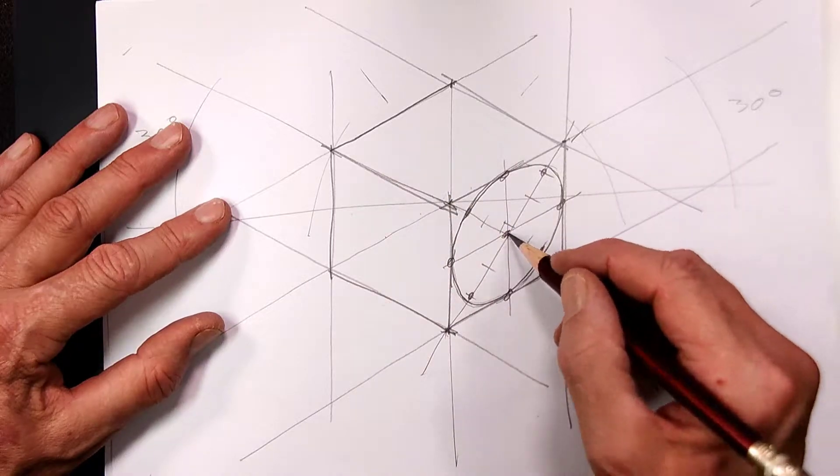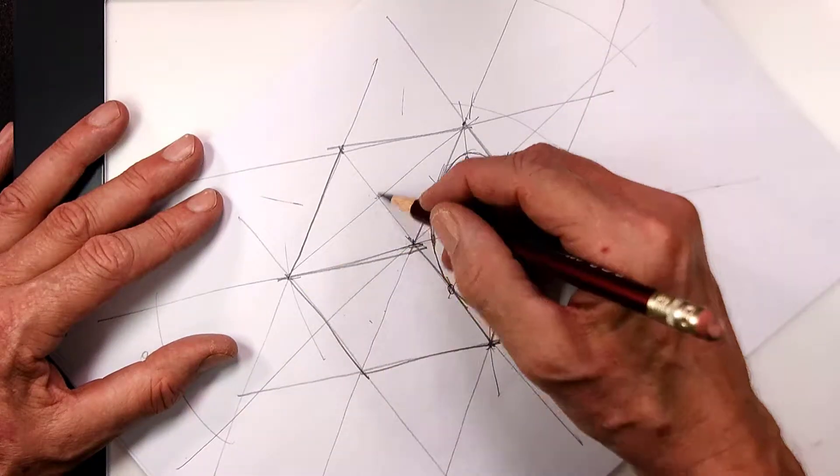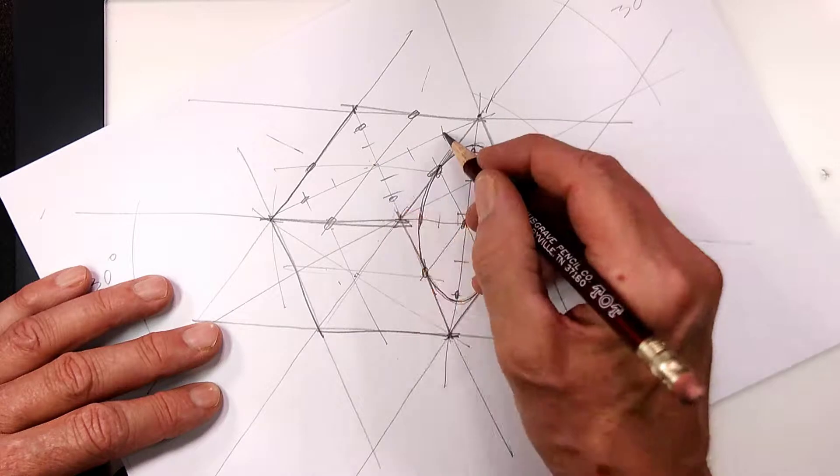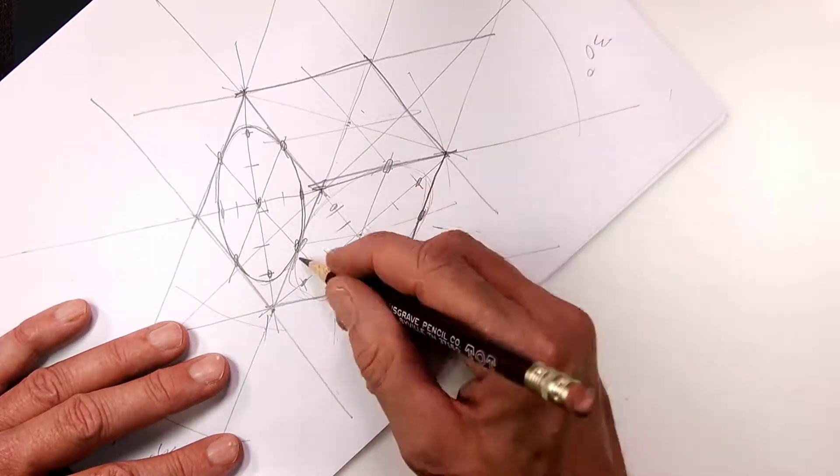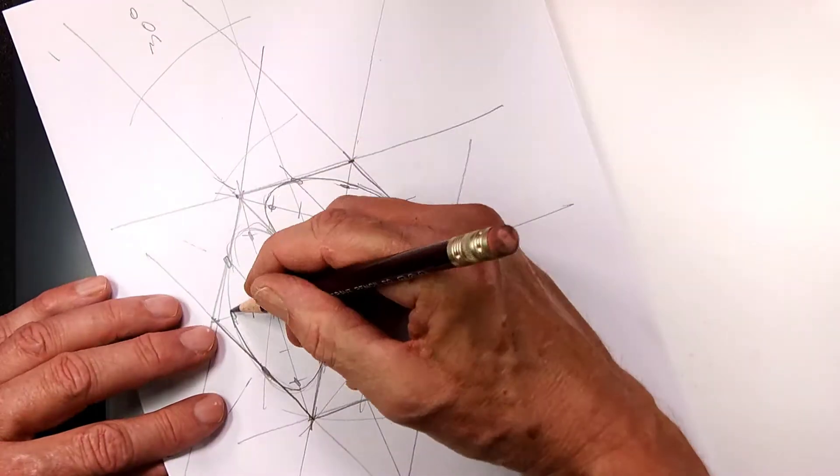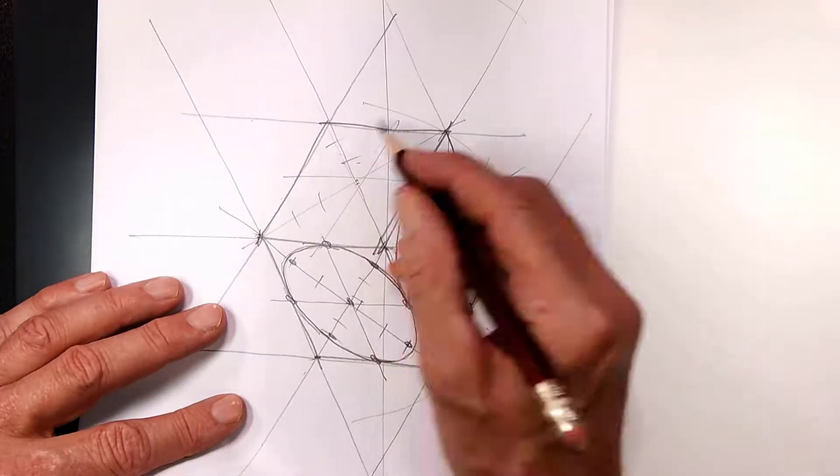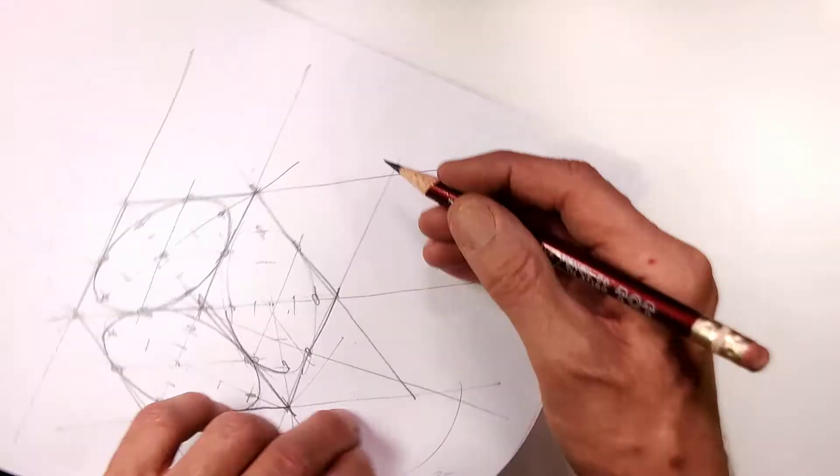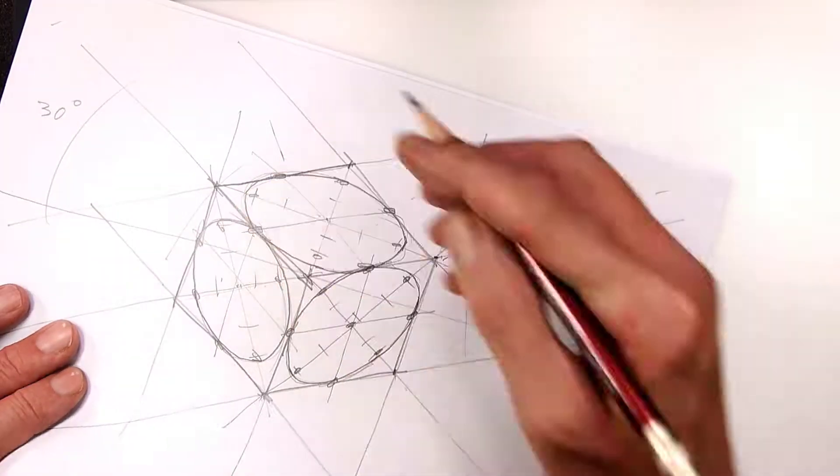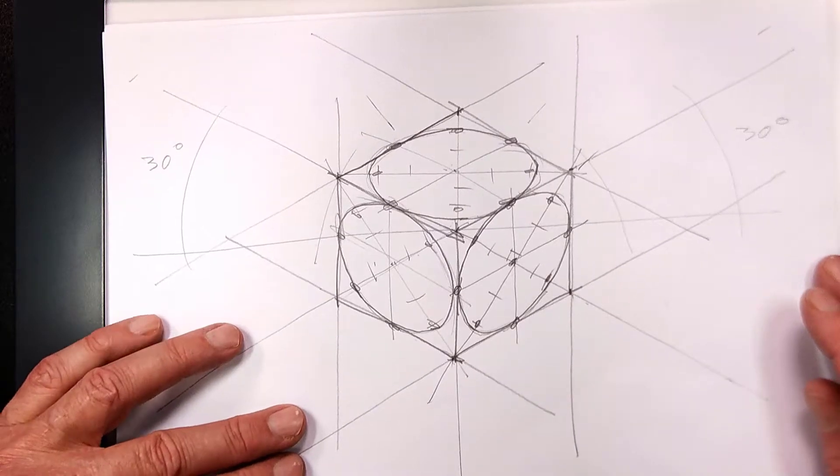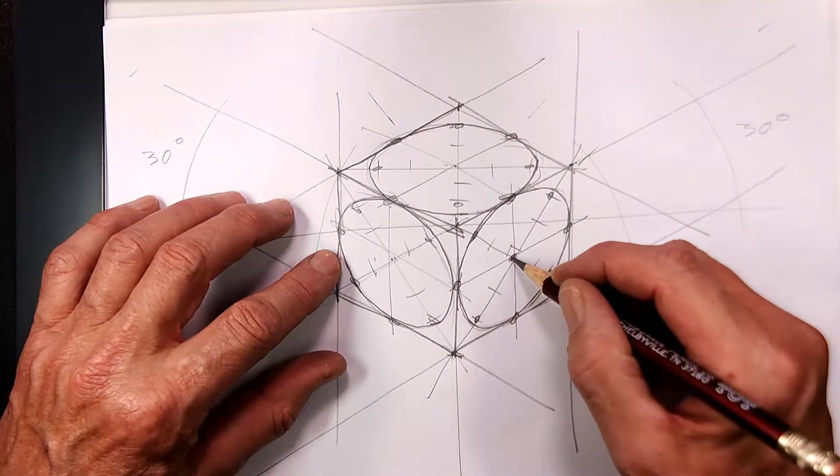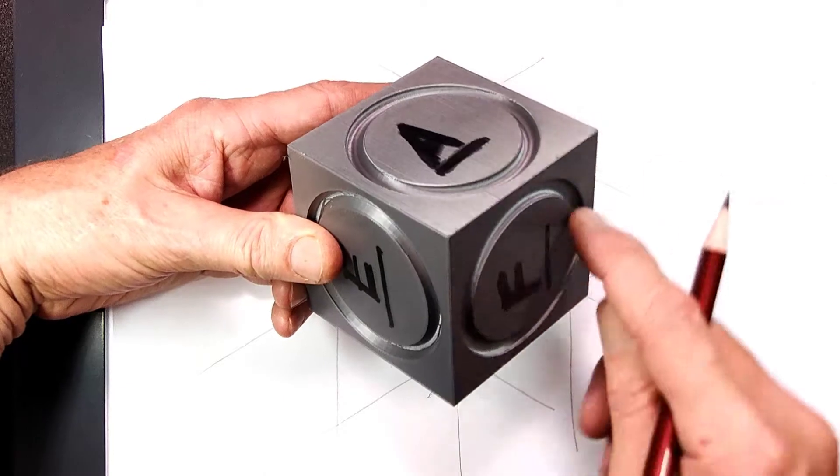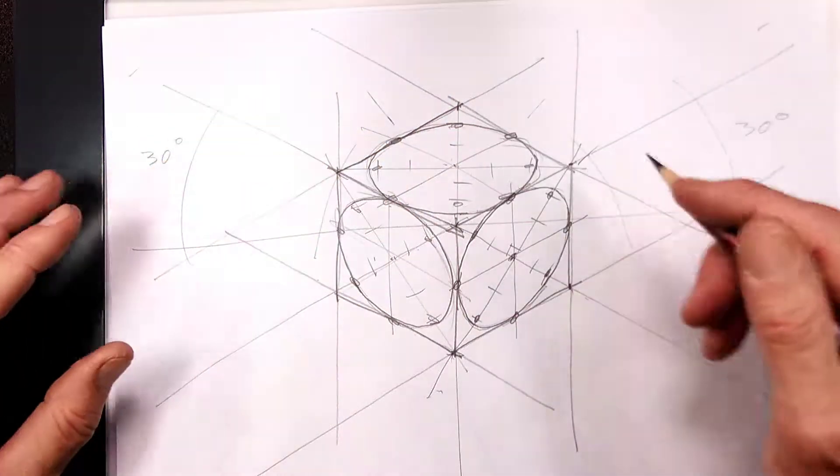Now what I'm going to do is to draw the ellipse on the other two sides. This is a cube with ellipses on all three sides. It's as if you were to look at this. You can see ellipses on all three sides. Now, what can you do with this?